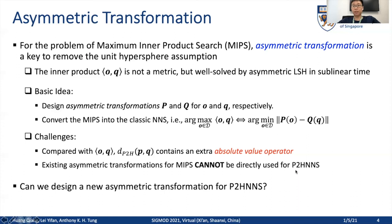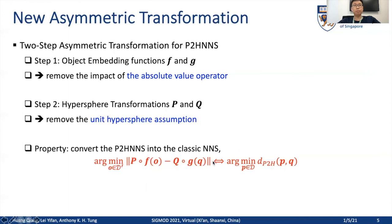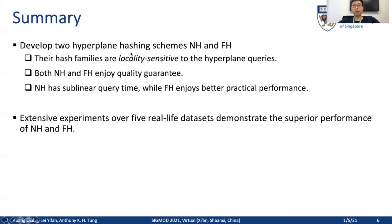So an interesting question is: can we design a new asymmetric transformation for the point to hyperplane NN search? In this paper, we design a two-step asymmetric transformation for the point to hyperplane NN search. In step one, we design two object embedding functions F and G to remove the unique hypersphere assumption. With this two-step asymmetric transformation, we can convert the point to hyperplane NN search into the classic point to point NN search. After that, we developed two hyperplane hashing schemes, NH and FH, and demonstrate that their hash family is locality-sensitive to the hyperplane query. We also show that both methods enjoy quality guarantees.